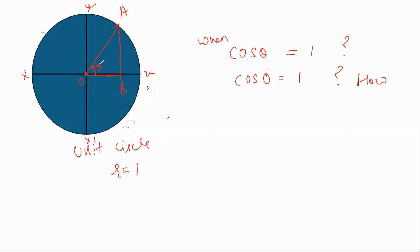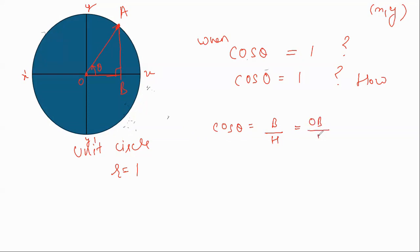Now please understand carefully. If I ask you the coordinates of point A, you write them as x comma y. What is cos θ? Cos θ equals base over hypotenuse. The base is OB and the hypotenuse is 1, so cos θ equals OB. What is sin θ? Sin θ equals perpendicular over hypotenuse, which is AB over 1, so sin θ equals AB.